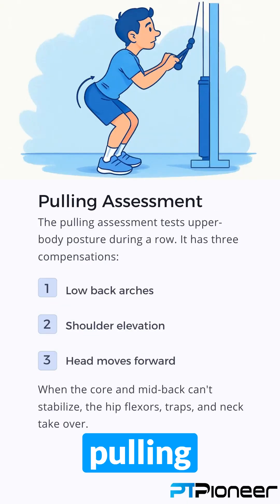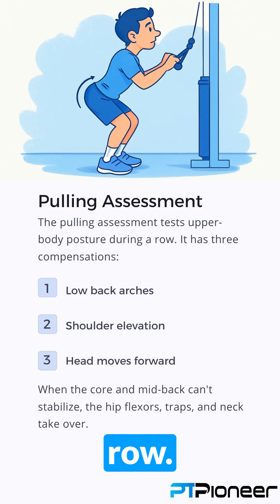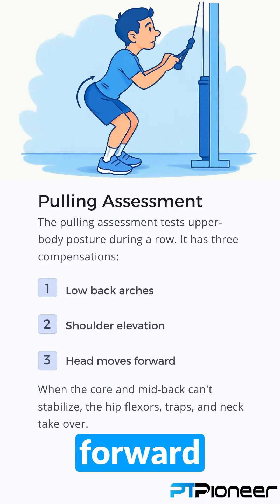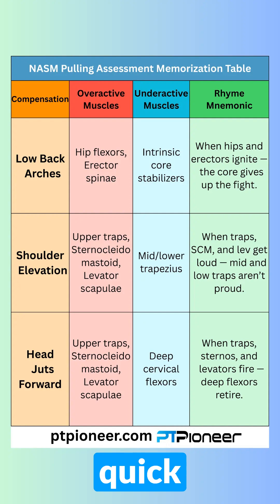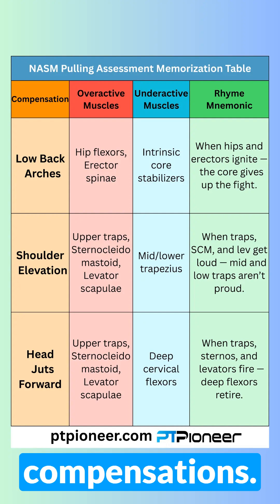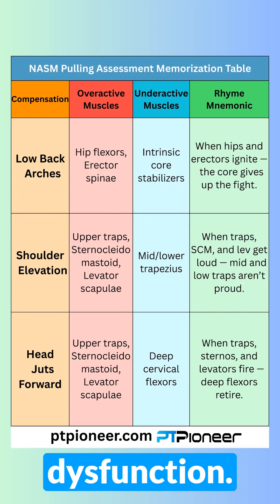Number one: Pulling assessment. The pulling assessment tests upper body posture during a row. It has three compensations: low back arches, shoulder elevation, and head moves forward. When the core and mid-back can't stabilize, the hip flexors, traps, and neck take over. This is your quick reference mnemonic for all three pulling assessment compensations. Save this table — you'll want it when reviewing upper body dysfunction.